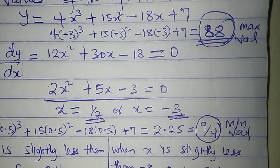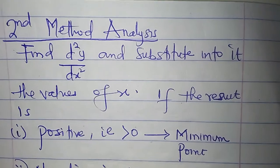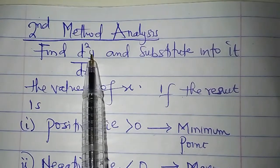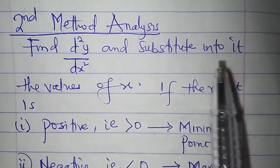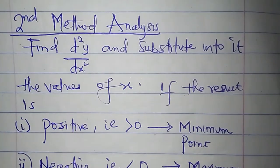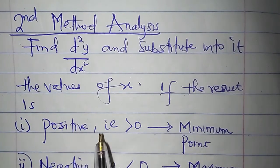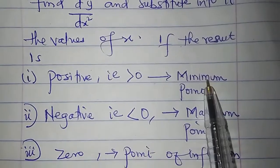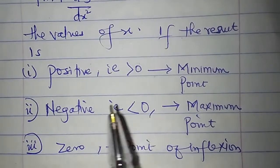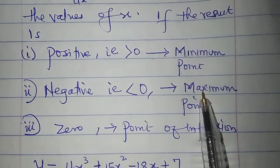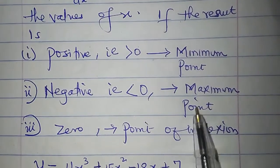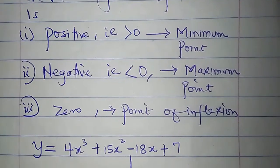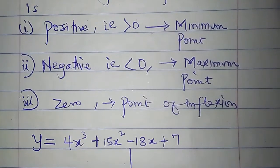Now let's look at the second method analysis. To determine the maximum or minimum point, we find the second derivative d²y/dx² of the function and substitute the values of x into it. If the result is positive (greater than 0), it is a minimum point. If the result is negative (less than 0), it is a maximum point. And if the result is 0, it is a point of inflection — neither maximum nor minimum.